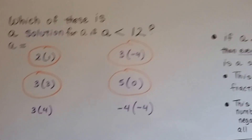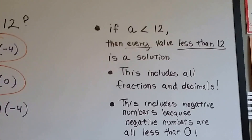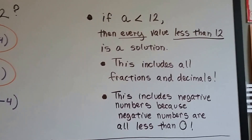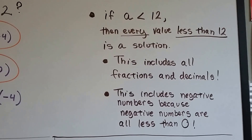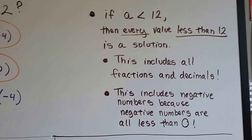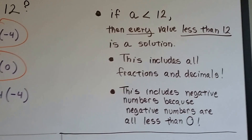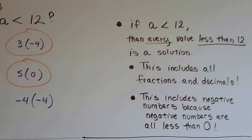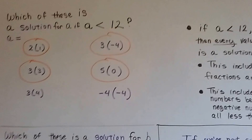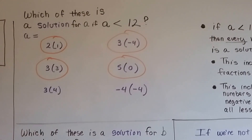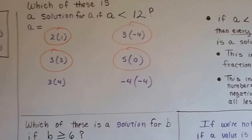So if A is less than 12, then every value less than 12 is a solution. This includes all fractions and decimals, and it includes all negative numbers because negative numbers are less than 0. We can have an infinite amount of solutions, because we could keep going into the negatives to infinity — into the millions and billions and trillions.